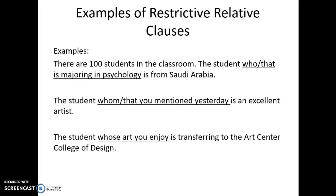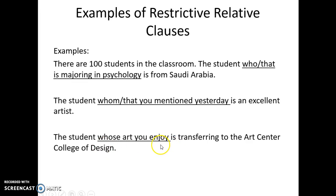Another example: 'The student whose art you enjoy is transferring to the Art Center College of Design.' We can use the relative pronoun 'whose.' The clause 'whose art you enjoy' specifies which student we're talking about. If we take out this relative clause, we're left with 'the student is transferring to the Art Center College of Design.' The grammar is correct, but now we don't know which student we're talking about. So we need this adjective clause to identify which student.